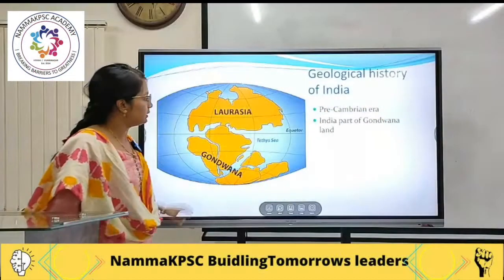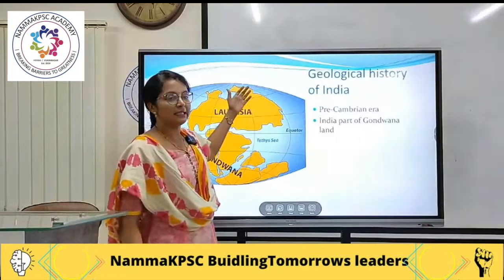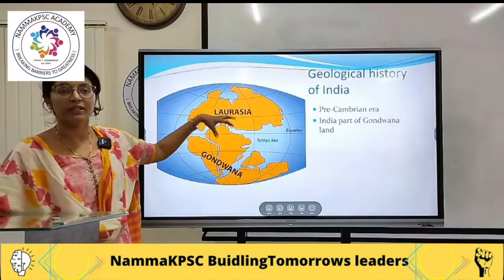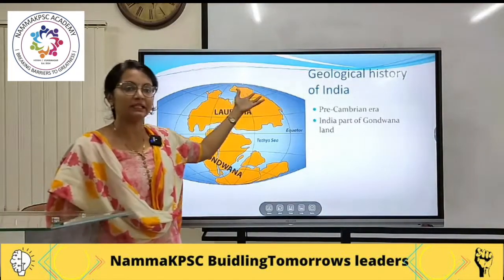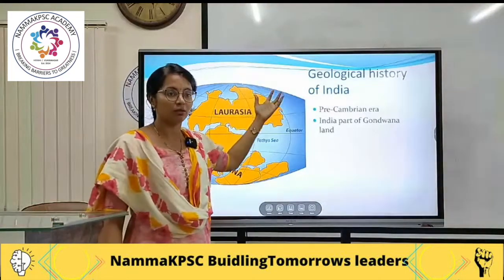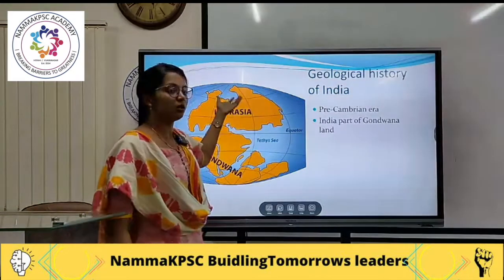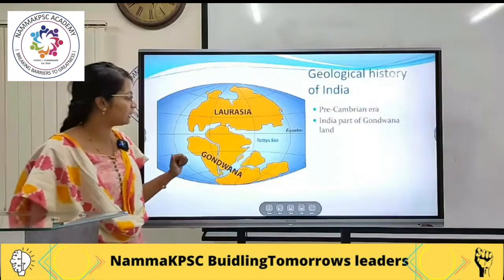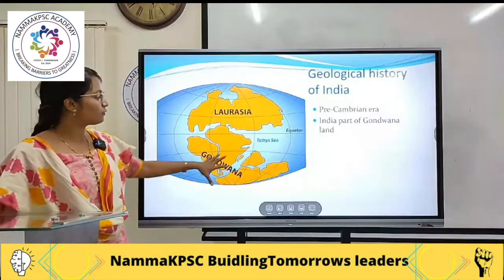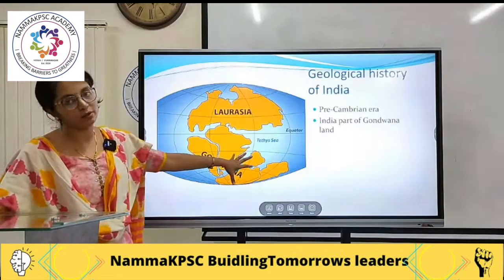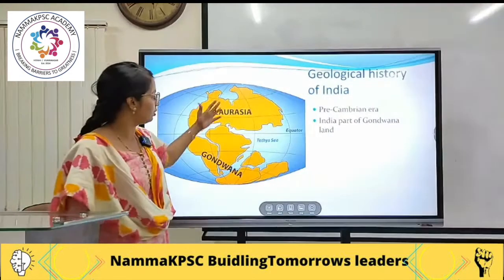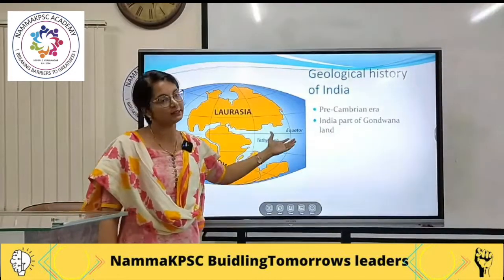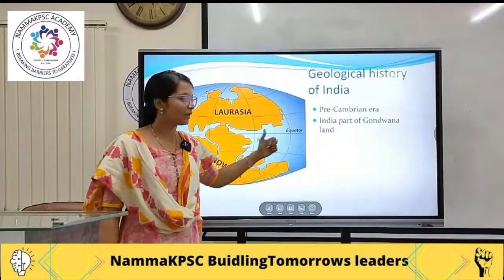In the pre-Cambrian era, we had seen that the earth's terrestrial parts were split into two. On the northern hemisphere we had Laurasia, and on the southern hemisphere we had Gondwana land. So India was part of Gondwana. In between Laurasia and Gondwana, there was a huge sea which was named as the Tethys Sea.